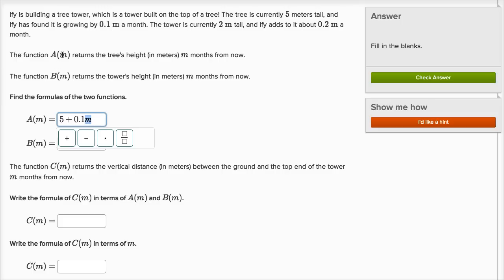Remember, m is the number of months. So after zero months, which is right now, this is just going to be five, after one month it's going to be 5.1, after two months it's going to be 5.2, which is exactly what we want.